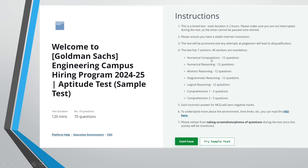The sample test consists of seven sections: Numerical Computations, Numerical Reasoning, Abstract Reasoning, Diagrammatic Reasoning, Logical Reasoning, Comprehension 1, and Comprehension 2. Some sections have around 12 questions; Comprehension 1 and Comprehension 2 have 5 questions each. The actual test scheduled for Sunday will also follow the same pattern, so attempting the sample test will help you get more practice.